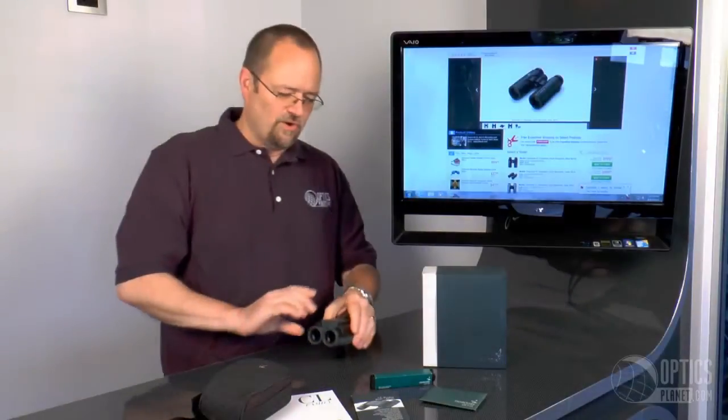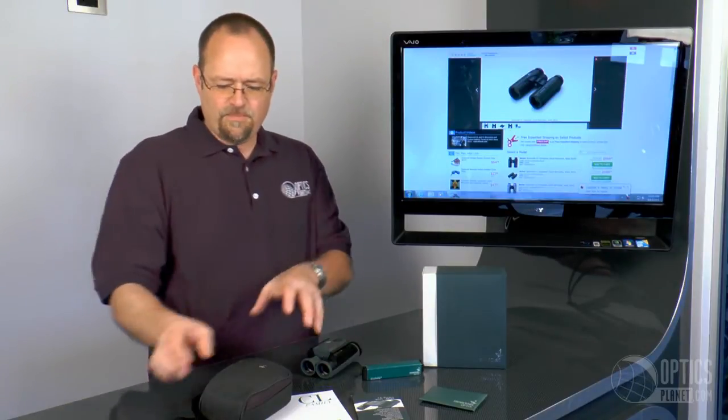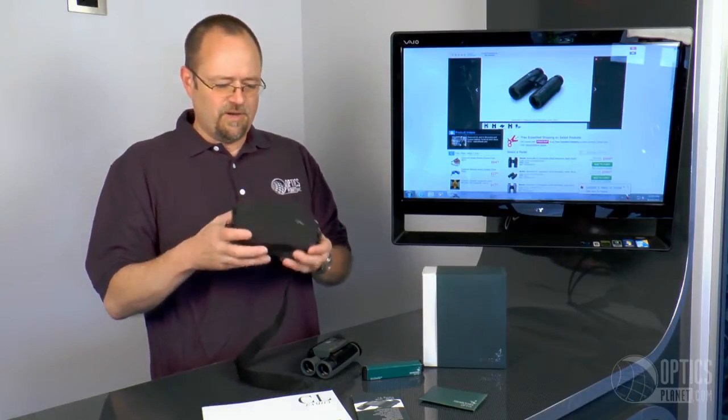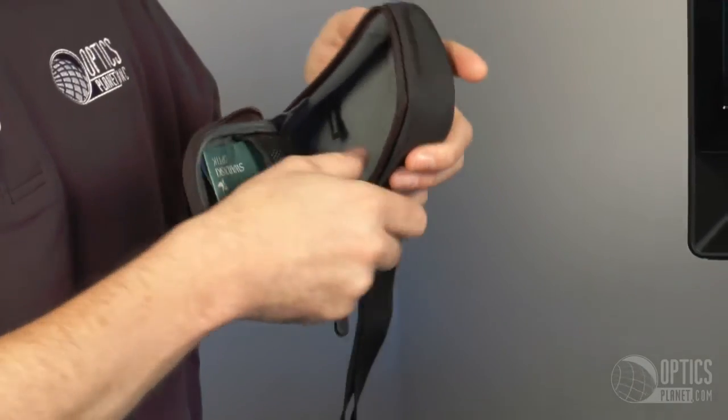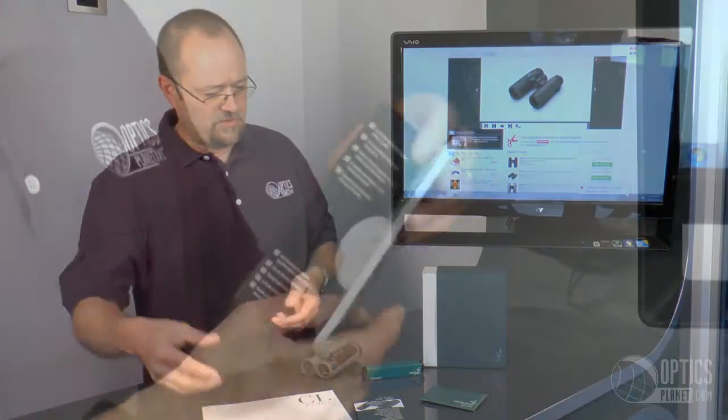They come with all the normal Swarovski accessories. Very nice strap. This is a step above in the type of case that you get from most manufacturers. Very nicely built. Padded on the inside. Micro fleece on the inside.